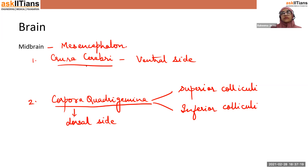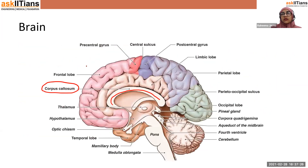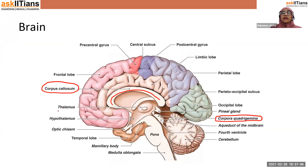Looking at the picture again, corpora quadrigemina is shown here. I would also like to point out the thalamus, which is on the left and right hand side of the diencephalon; the epithalamus, which is the roof; and the hypothalamus, which is the floor. Epithalamus is not clearly shown here.